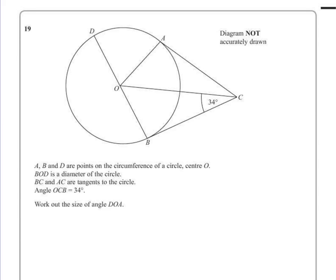Angle OCB is 34 degrees. Work out the size of angle DOA.